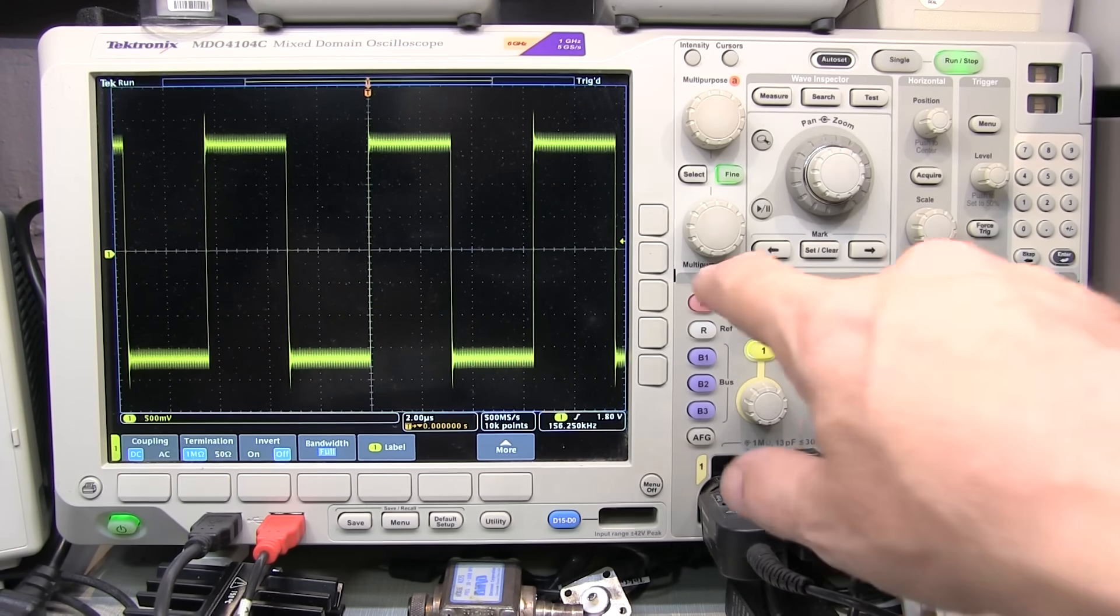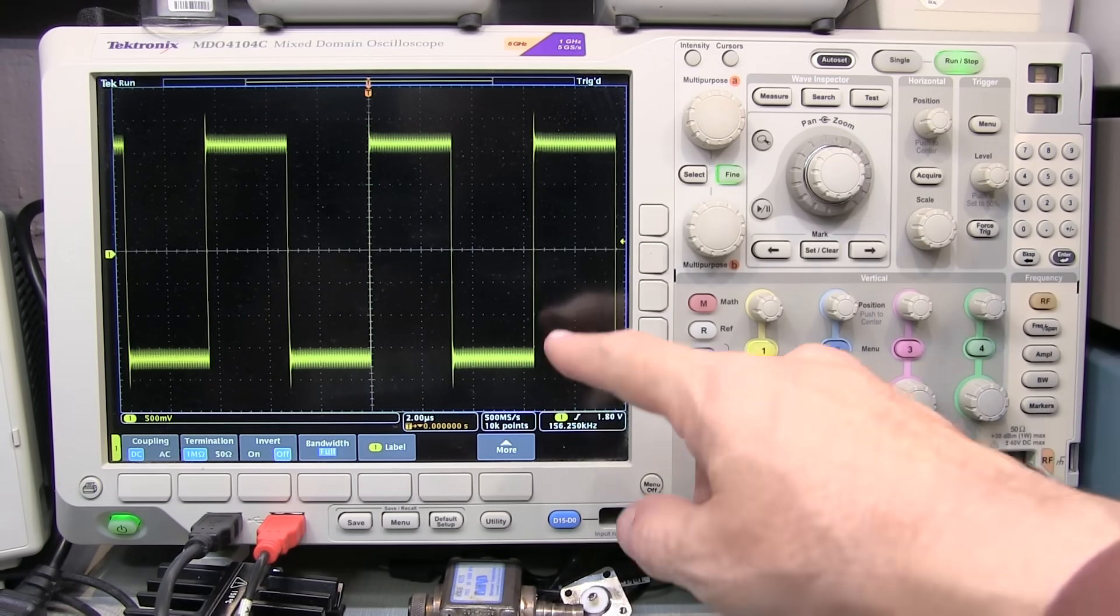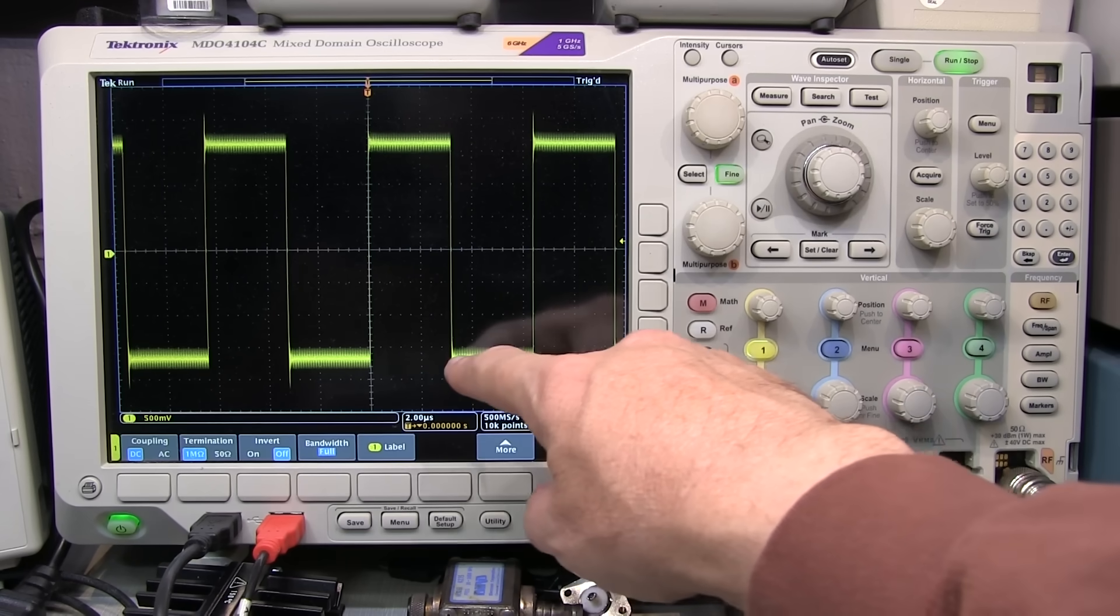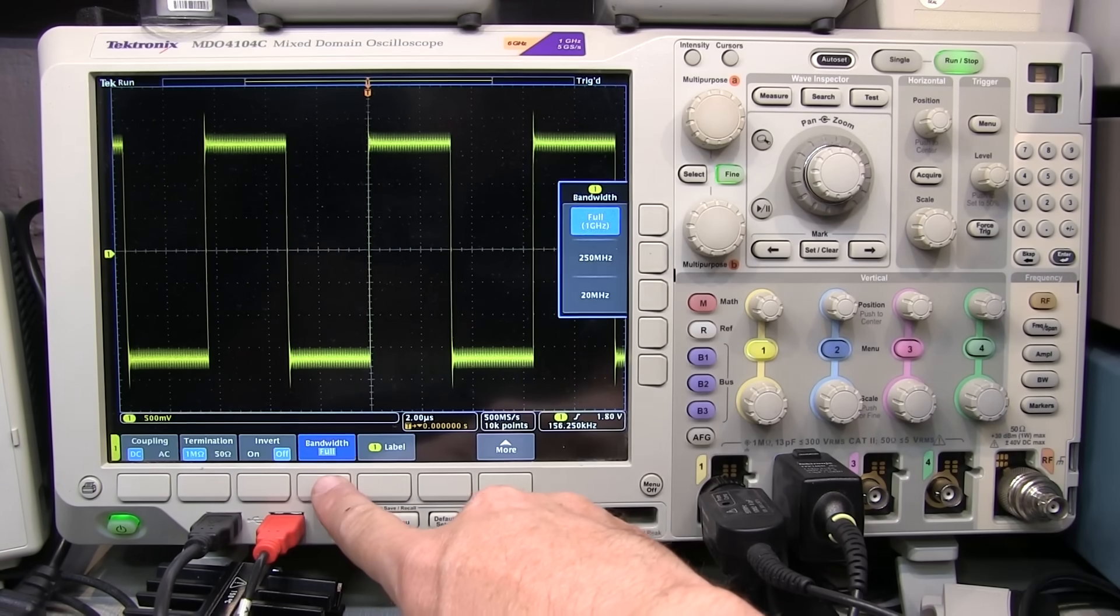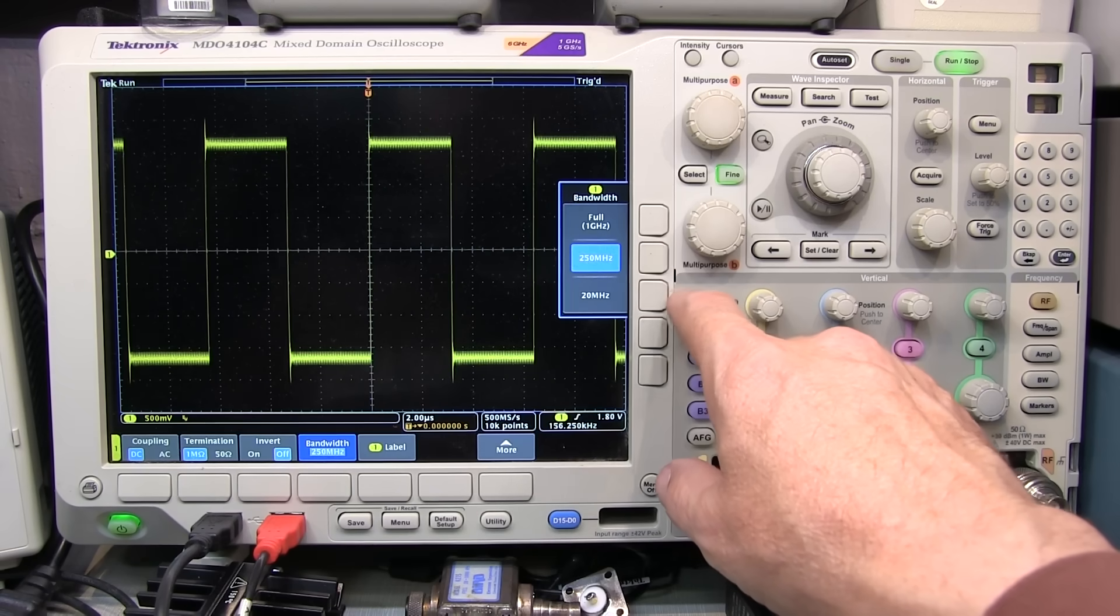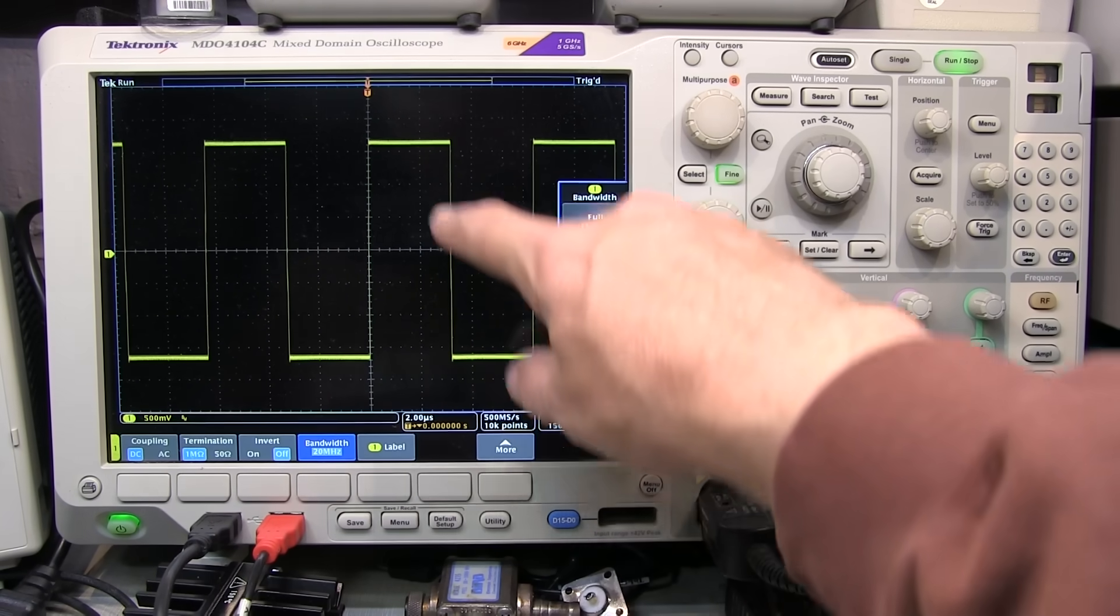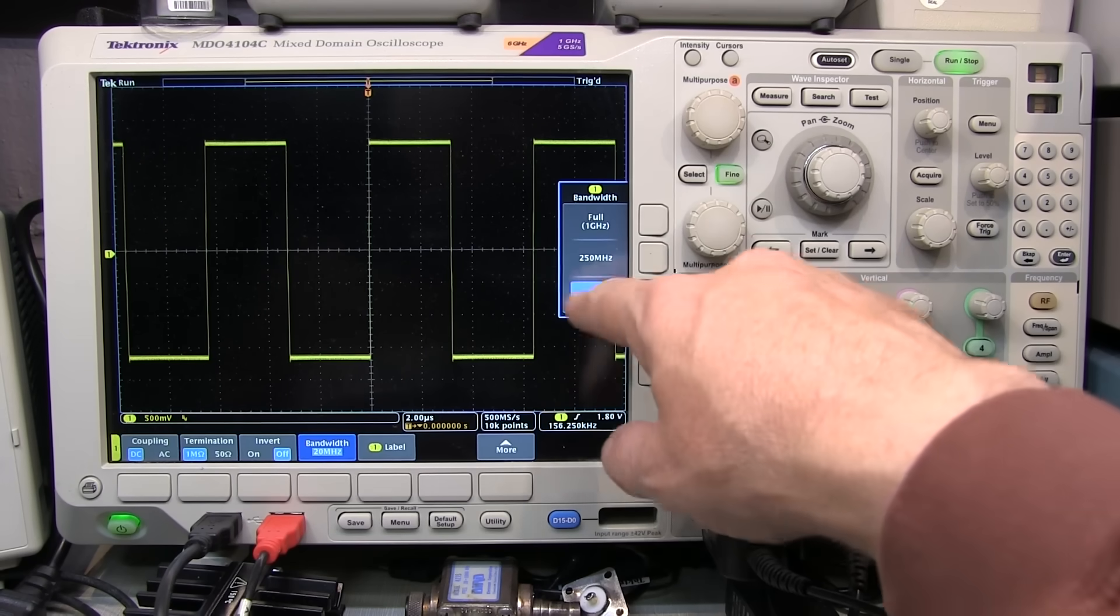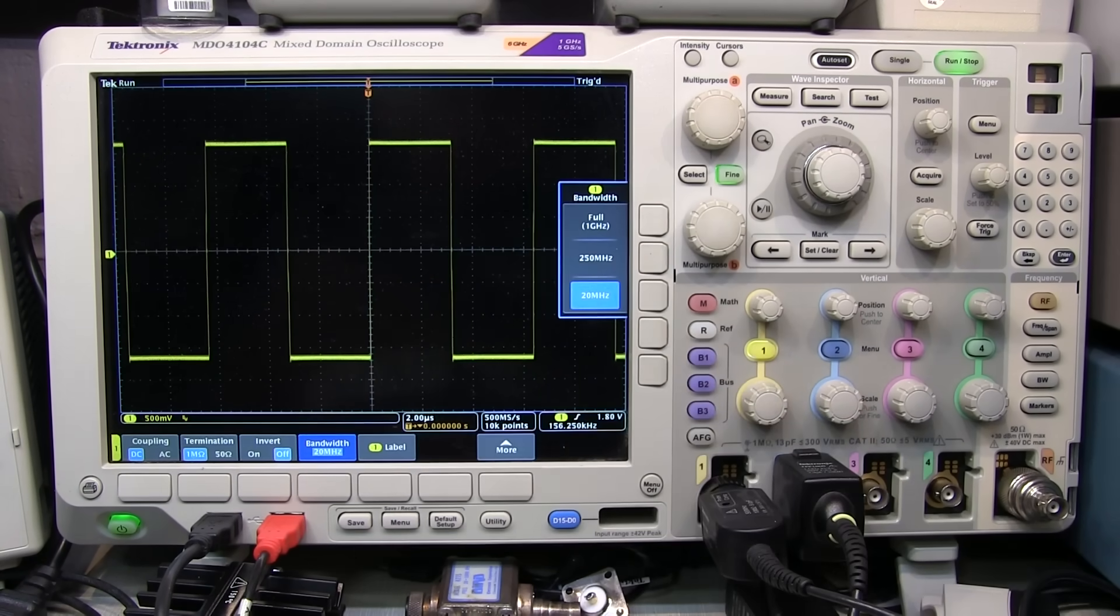Another consideration is to consider what you need for vertical bandwidth. This is a one gigahertz scope, and I can see I've got some noise on the signal here. It might make it hard to measure what those levels are. So if I go down my bandwidth control, I can choose, say, 250 megahertz or even 20 megahertz of bandwidth and greatly clean up the signal by getting rid of some of that wideband noise. Of course, you've got to apply this judiciously to be sure you're not going to roll off an important aspect of your signal.